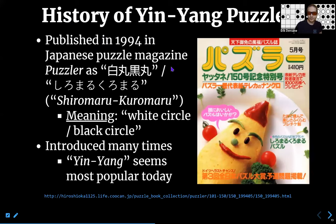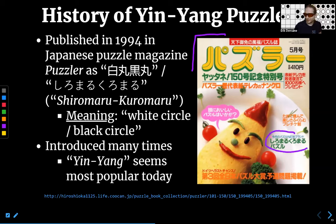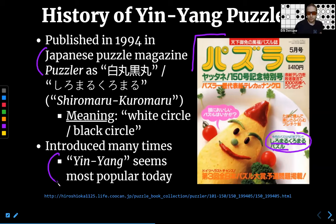On to history — first yin-yang, then graph partitioning. The oldest reference we know is from 1994, but the first puzzle actually appeared in 1983, with the first naming visible in the bottom right: Shiro Maru Kuro Maru puzzle. It became a regular puzzle in the Japanese puzzle magazine Puzzler, and since then has appeared in many settings. The most popular name these days is yin-yang, which is what we've stuck with. Shiro Maru Kuro Maru means white circle, black circle — pretty natural.